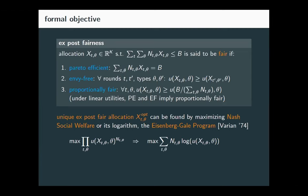This has already been well studied. Varian back in 1974 showed that the unique ex post fair allocation can be found by maximizing the Nash social welfare — the objective on the left — or equivalently maximizing its logarithm, which makes it a convex program. This is called the Eisenberg-Gale program, and this simplification comes from using linear utilities.